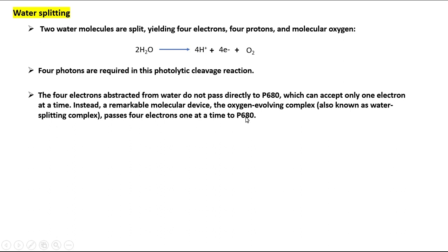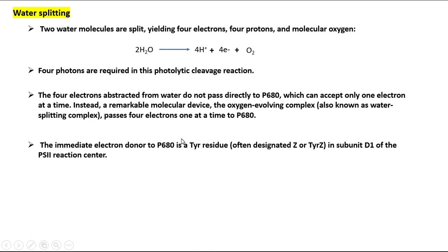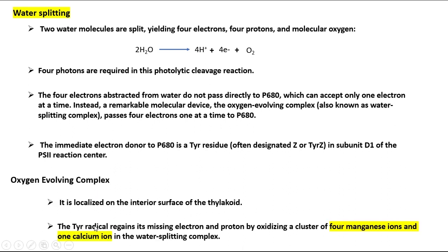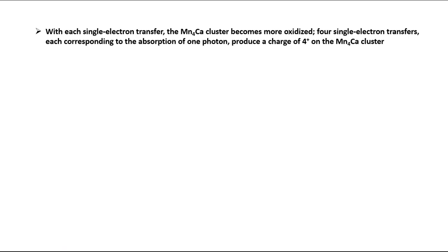The immediate electron donor to P680 is a tyrosine residue in subunit D1 of the photosystem II reaction center. The oxygen-evolving complex is localized on the interior surface of the thylakoid. The tyrosine radical regains its missing electron and proton by oxidizing a cluster of four manganese ions and one calcium ion in the water-splitting complex. With each single electron transfer, the Mn4Ca cluster becomes more oxidized; four single electron transfers produce a charge of 4+ on the Mn4Ca cluster.